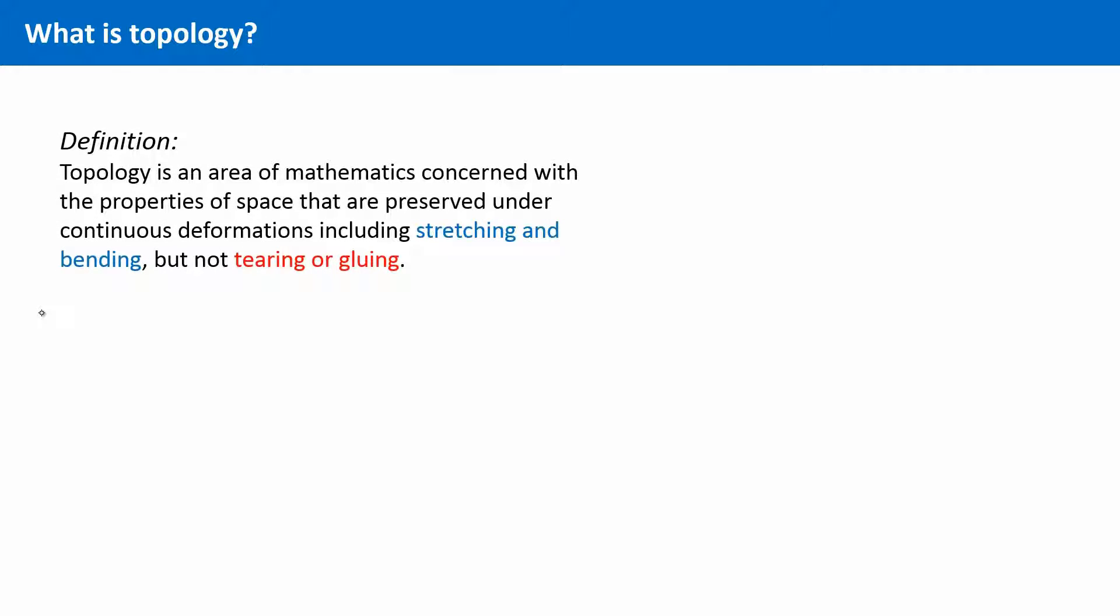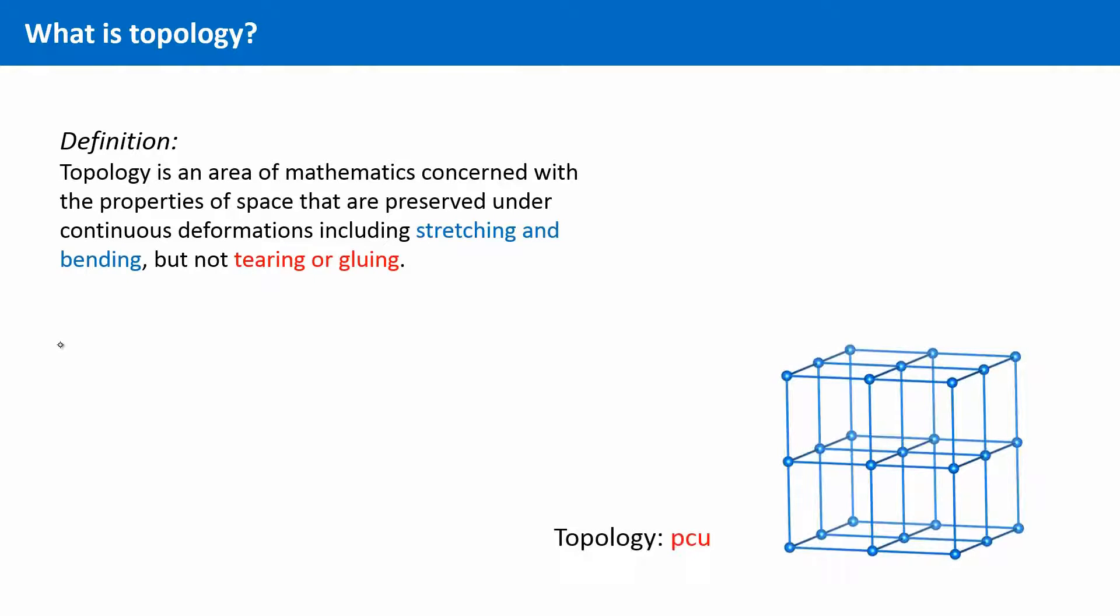Now, let's look at some MOFs and their underlying nets. You have already seen the underlying net of MOF-5 and I already told you that this does actually represent a cubic primitive arrangement.